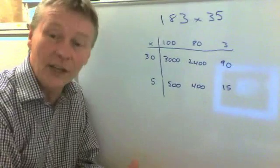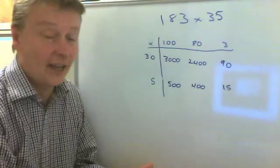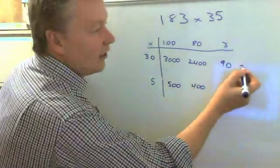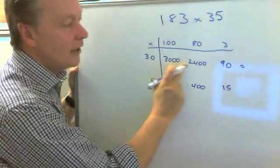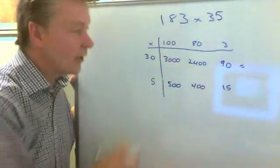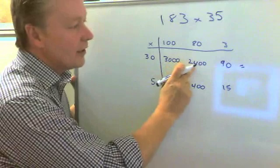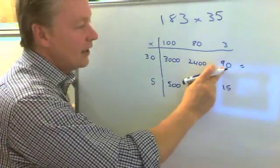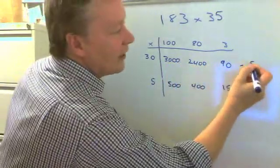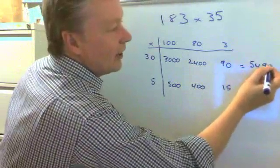Now in order to complete this calculation, what I need to do then is add everything together. So I have 3000 plus 2400 is 5400, plus 90 is 5,490.